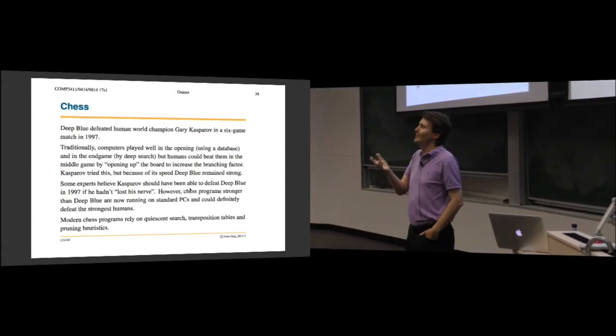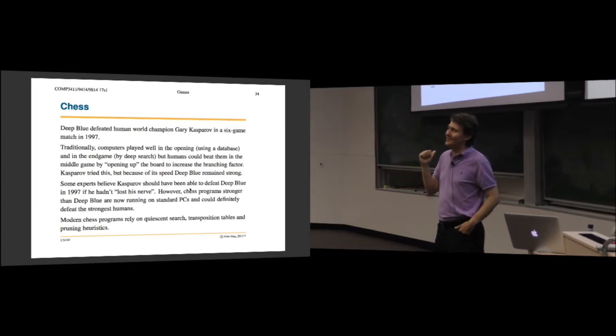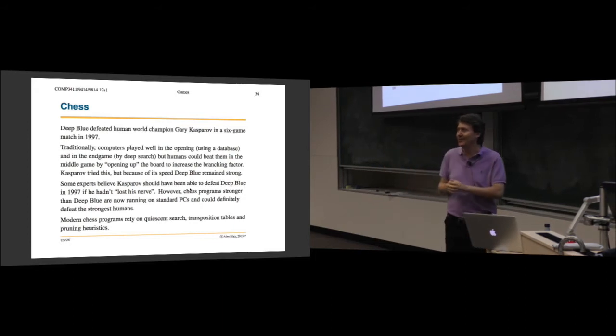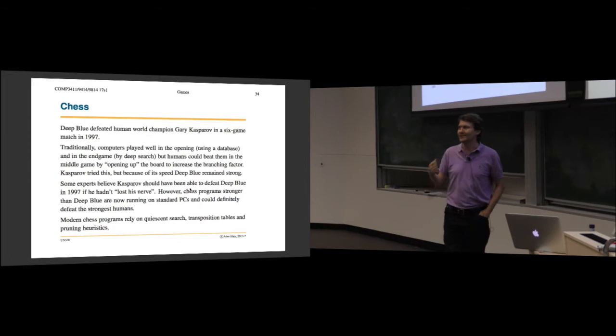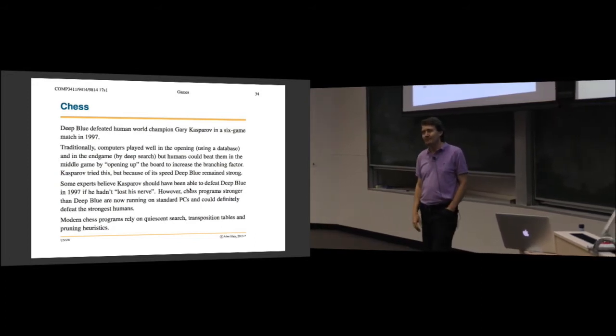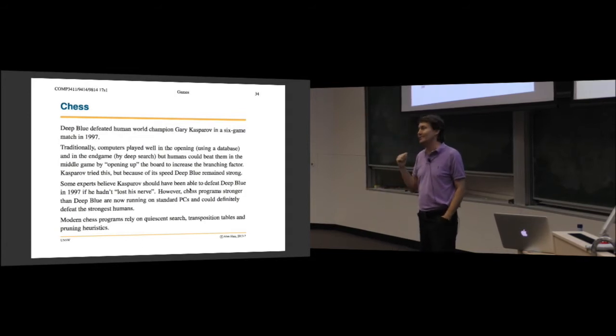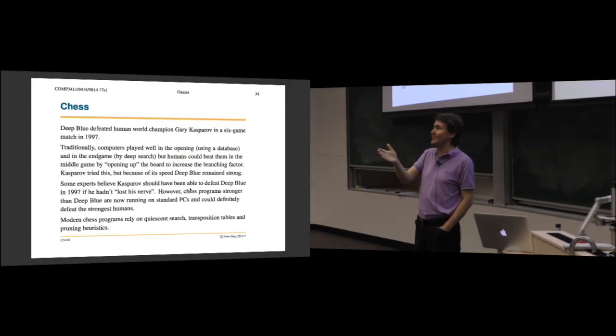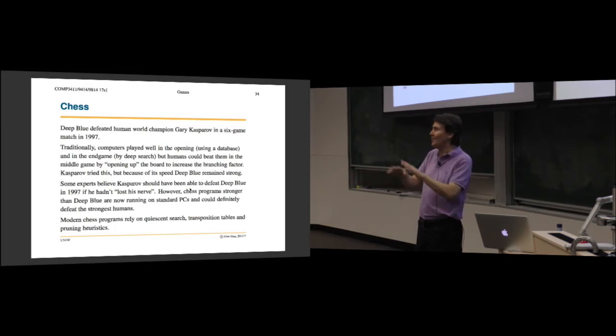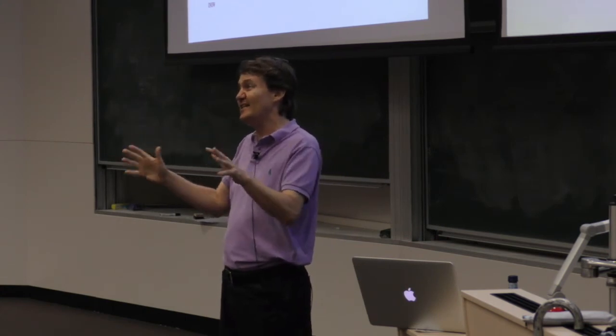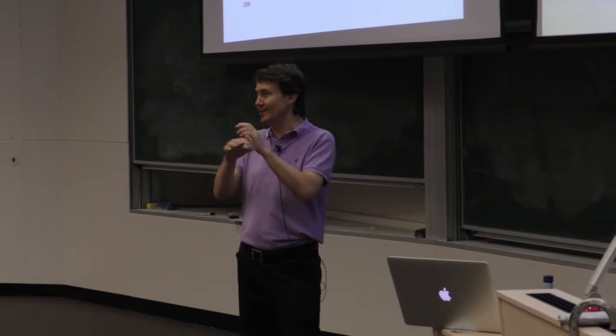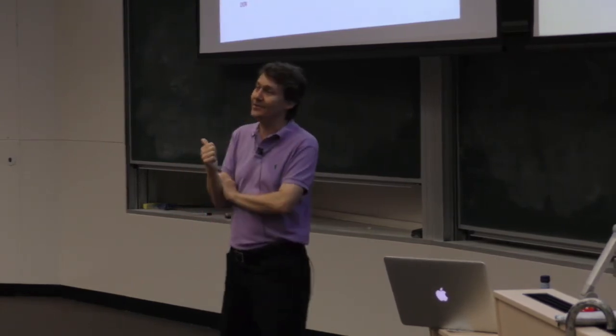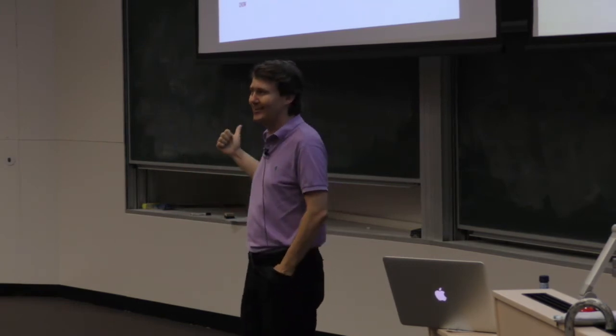The trick is that you try to give your opponent as many options as possible. The more options they have, the harder it is for them to search. There was a series of these matches between humans and computers going back to the 70s against Korshnoi and then Karpov. Until 97, the humans were always able to beat the computers. The way they did it is the computers were using this brute force search. So the human would try to open up the board and create a position where many different moves are possible.